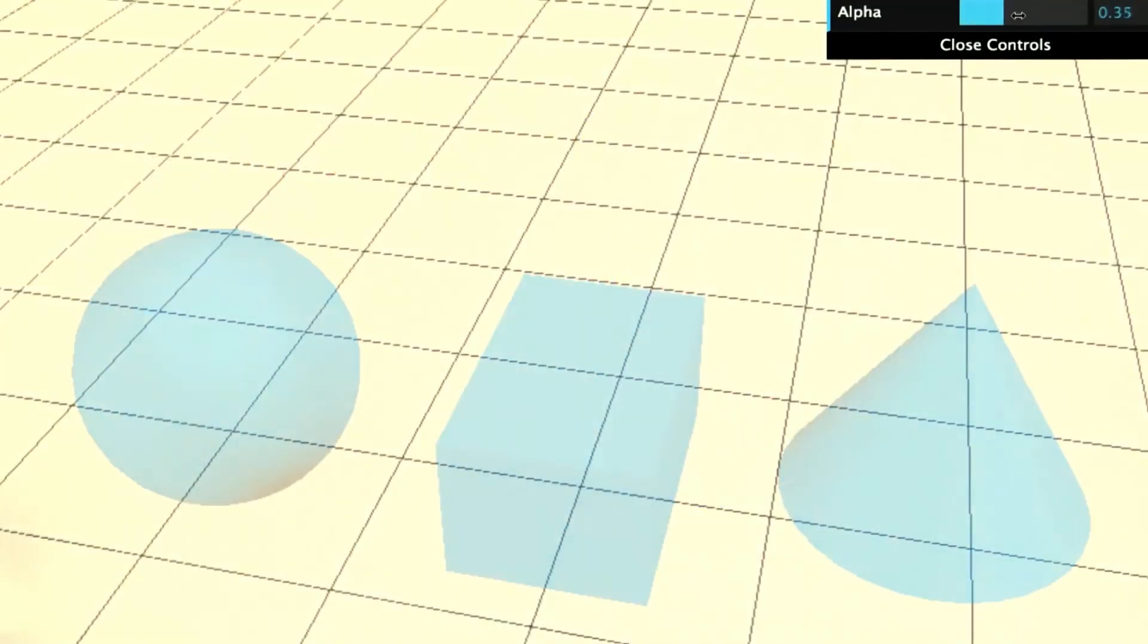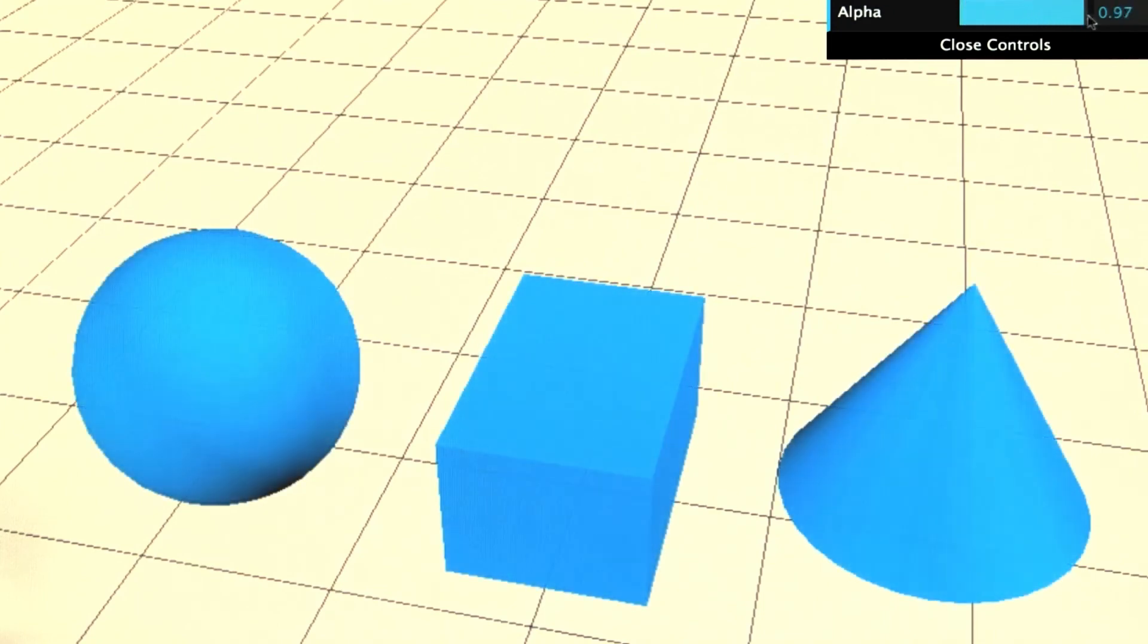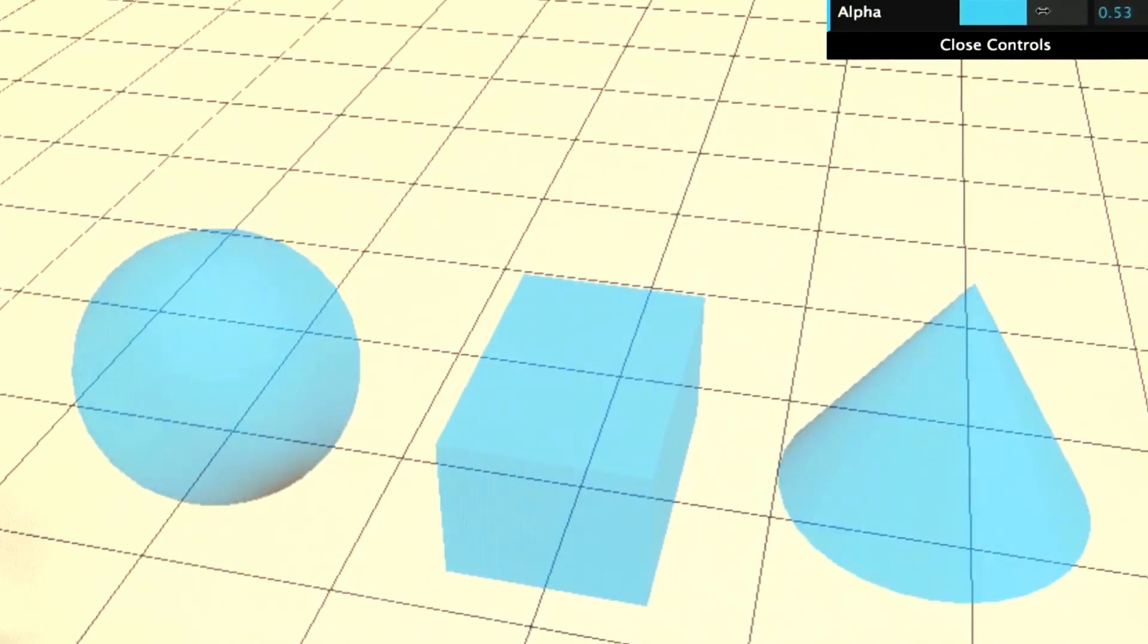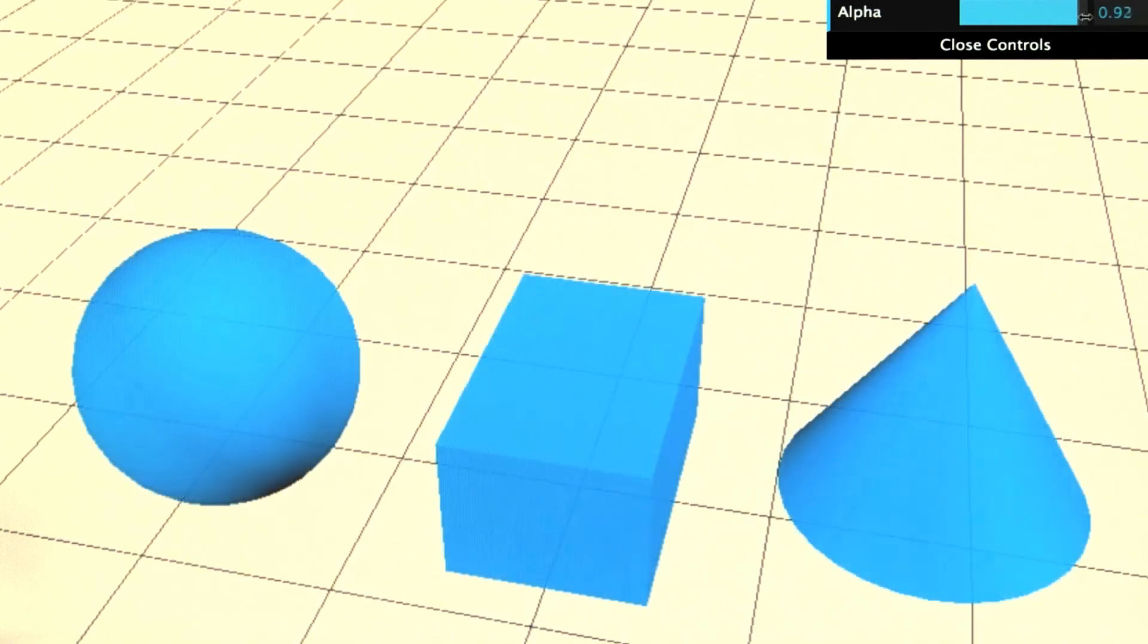The over operator is useful for transparency. However, there are many other blend modes available in WebGL. For example, one blend mode is called add, as it adds the source and destination colors together. In 3.js, the blend mode used is specified with the material's blending parameter.